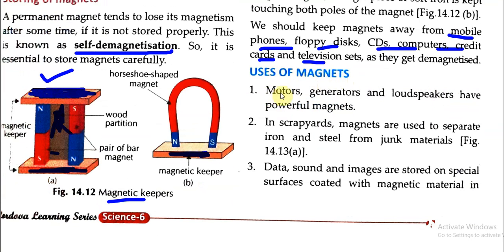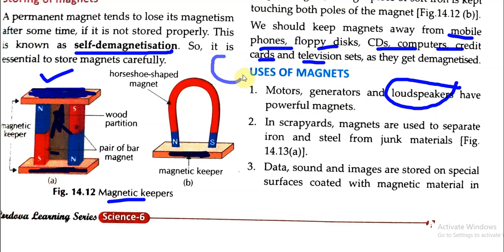Motors, generators, and loudspeakers have powerful magnets. Loudspeakers have a circular frame with a small magnet attached at the back. The entire diaphragm of the speaker is attached to this magnet, and that is how it functions.